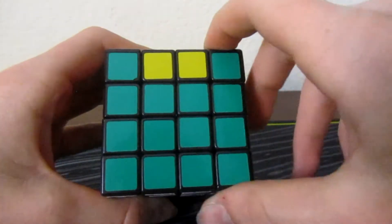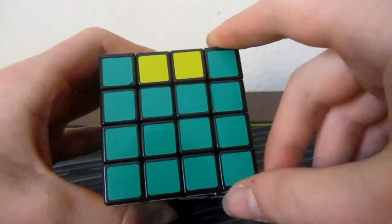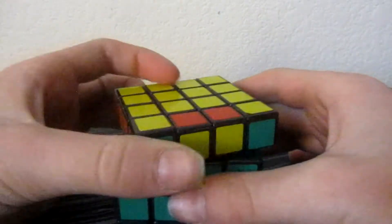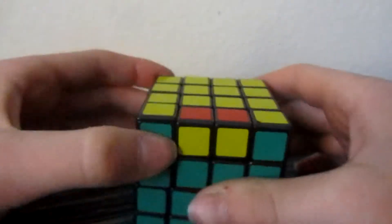Not going to be F prime, which is front counterclockwise. It's only going to be normal front. Same thing with the top. It's only going to be U, not U prime.